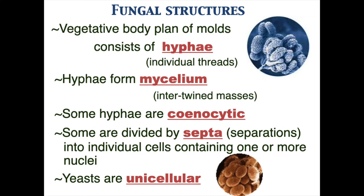Some terms you need to know for fungal parts or structures: a single strand is called a hypha — this is a vegetative body meaning there are no spores; it does not contain the reproductive part. Many hyphae intertwined together is called mycelium. Some hyphae can have more than one nucleus, and that would be coenocytic. If any hyphae have walls that separate the nuclei, this is called septa.